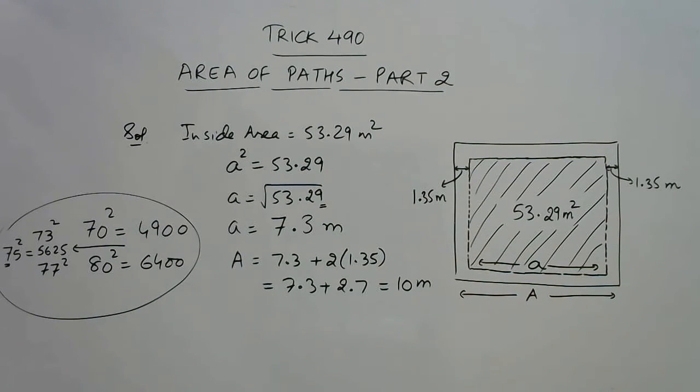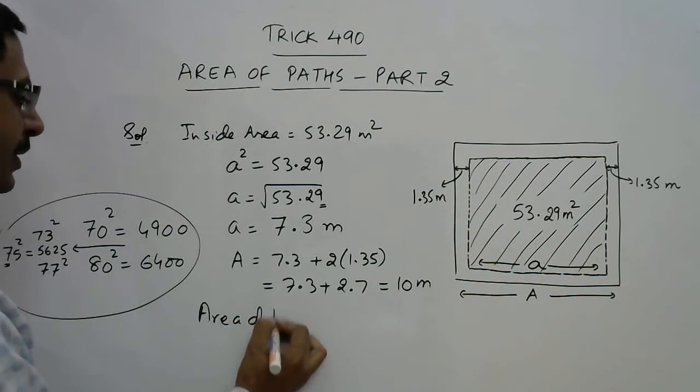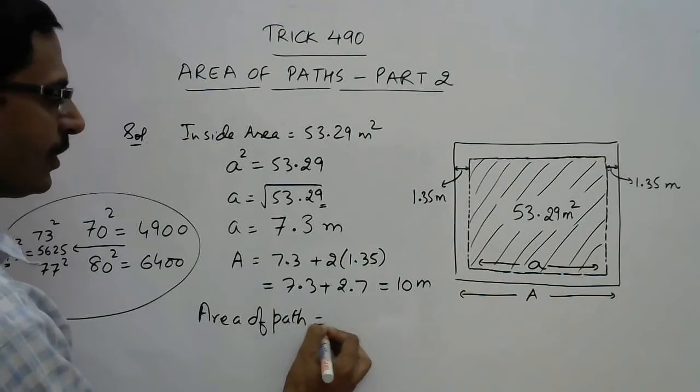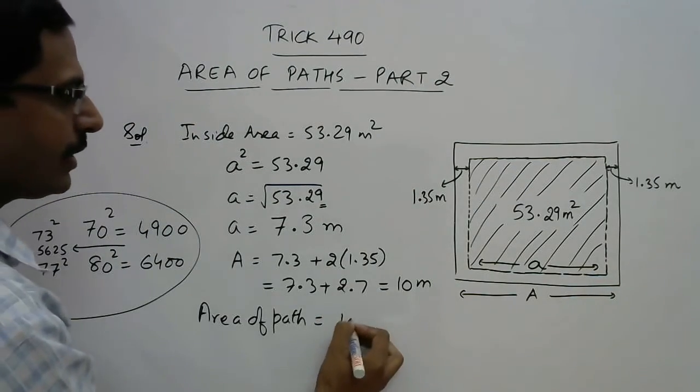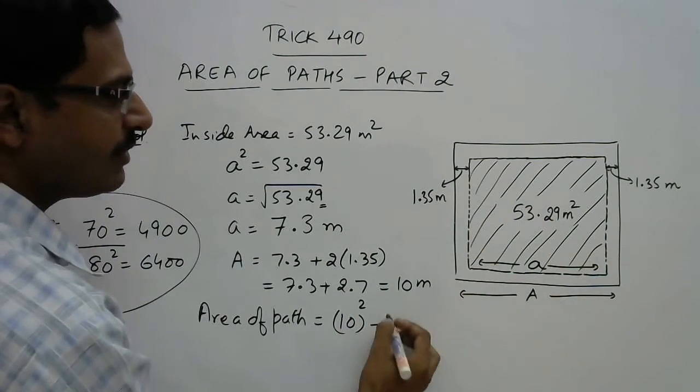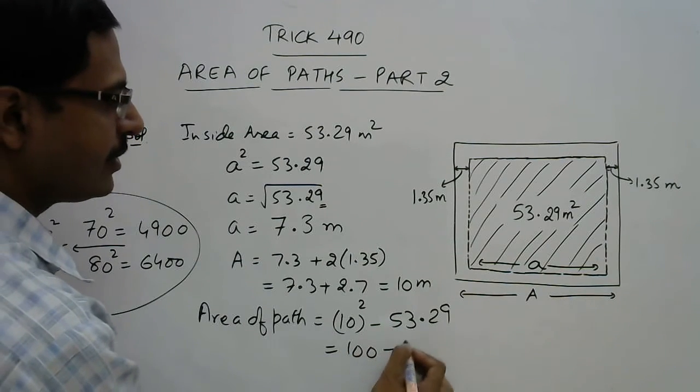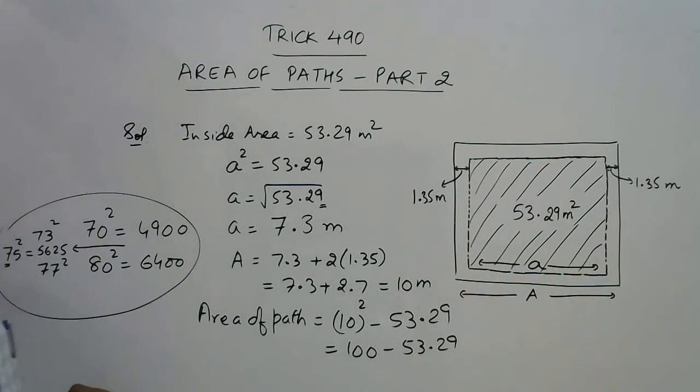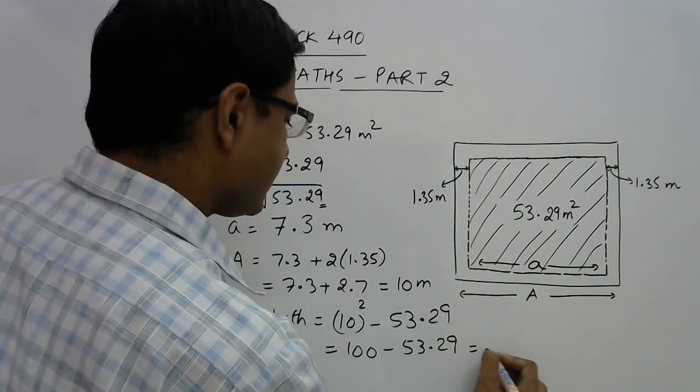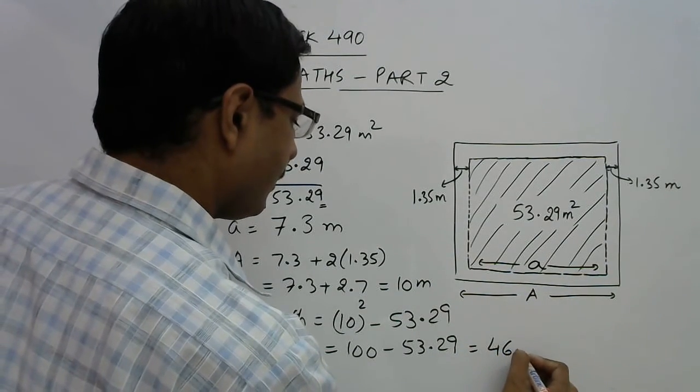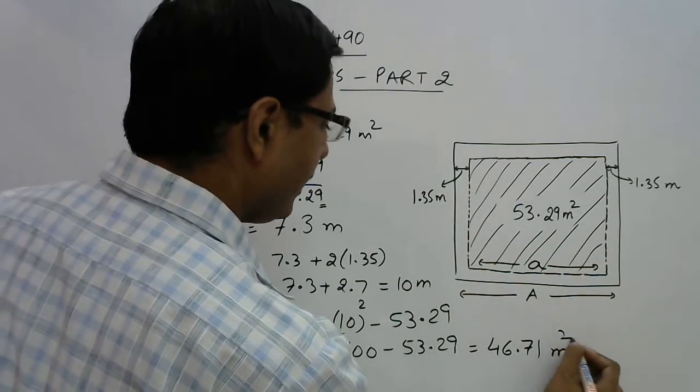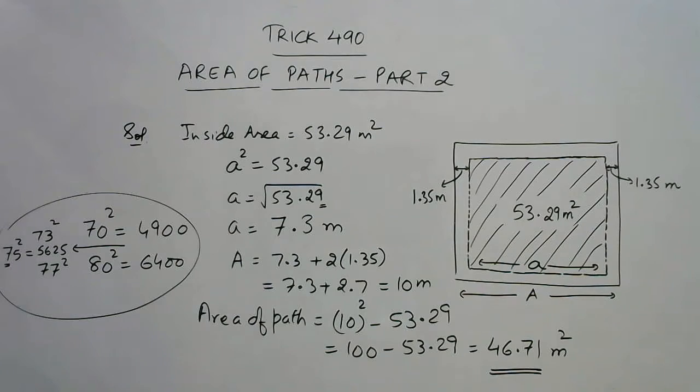Once we have found out the outer boundary length, area of path is very easy. Area of path is outer area, that is the total area 10 square, minus the inner area which is already given, 53.29. Just subtract 100 and 53.29 - you will get the final answer as 46.71 meters square. Here we have the area of the path.